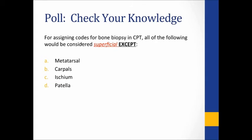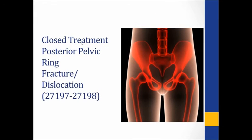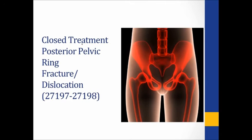That's just a fun little fact. They reworked some of the pelvic ring fracture dislocation codes — they were deleted, reworded, and brought back. The key point is they want you to differentiate between the posterior and anterior pelvic ring.